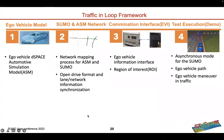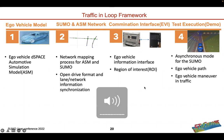The traffic-in-the-loop framework was broken up into four sections. The first covers the ego vehicle for the DSpace automotive simulation model. The second covers the SUMO and ASM network mapping process and network information synchronization. The third section covers the communication interface, which entails the ego vehicle information interface and the region of interest. Lastly, for test execution, we go over the asynchronous mode for SUMO, the ego vehicle path, and ego vehicle maneuvering in traffic.